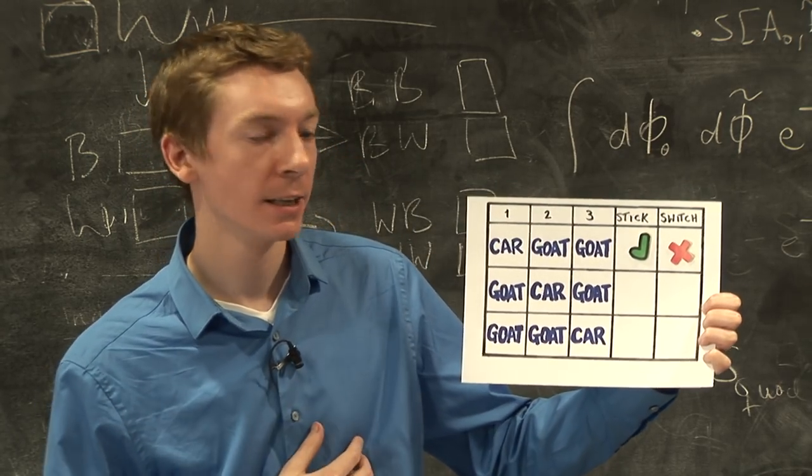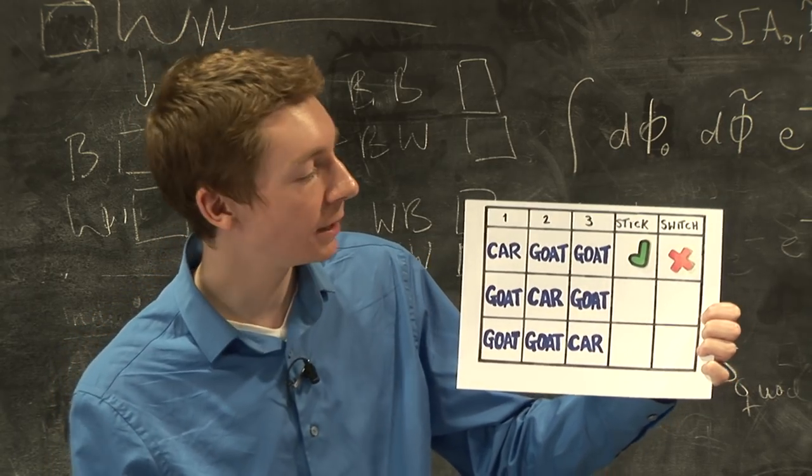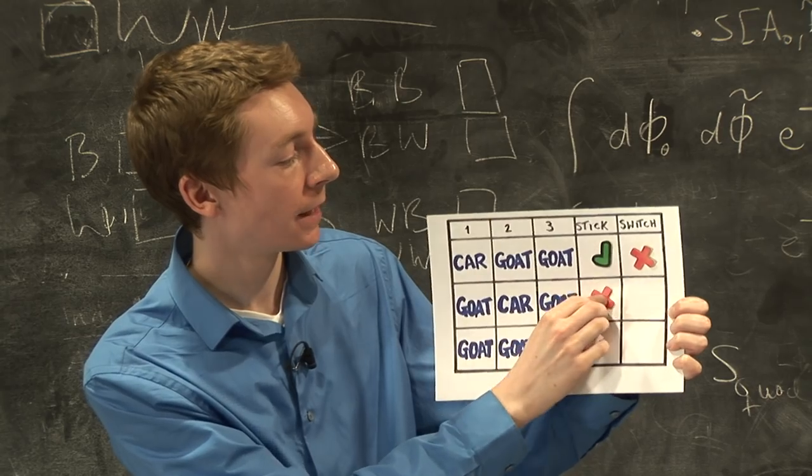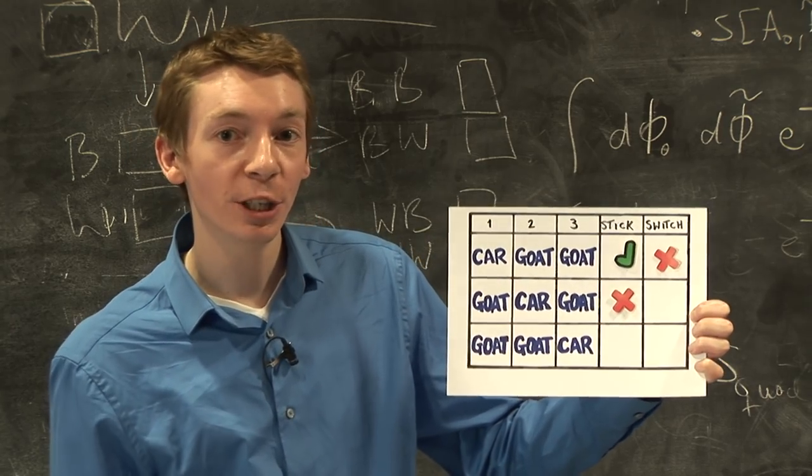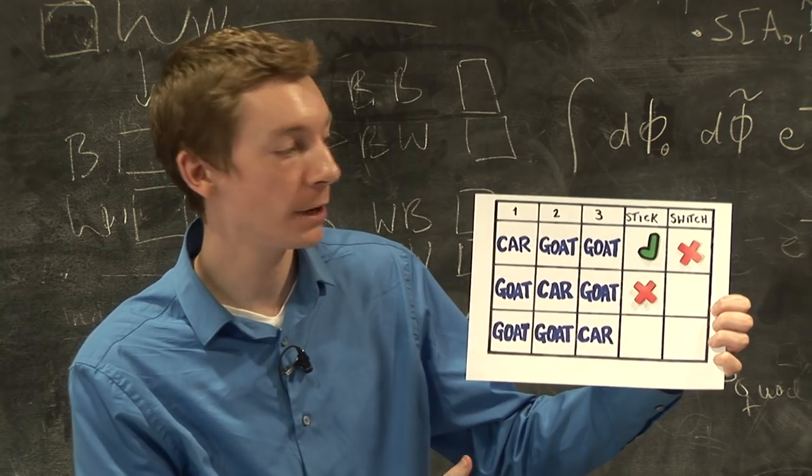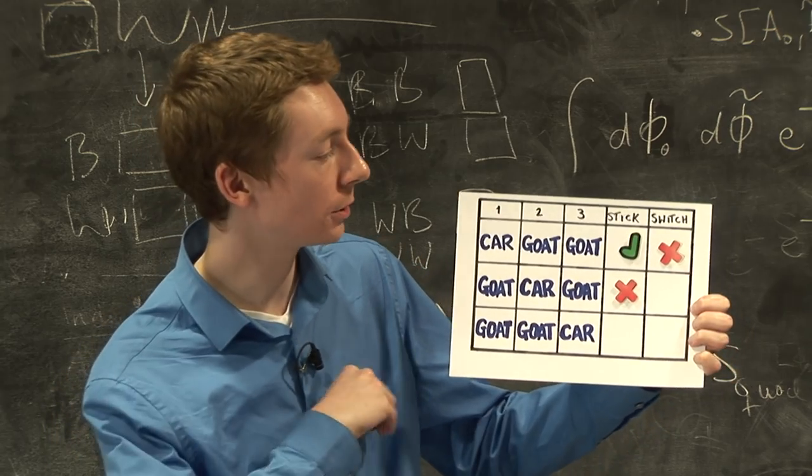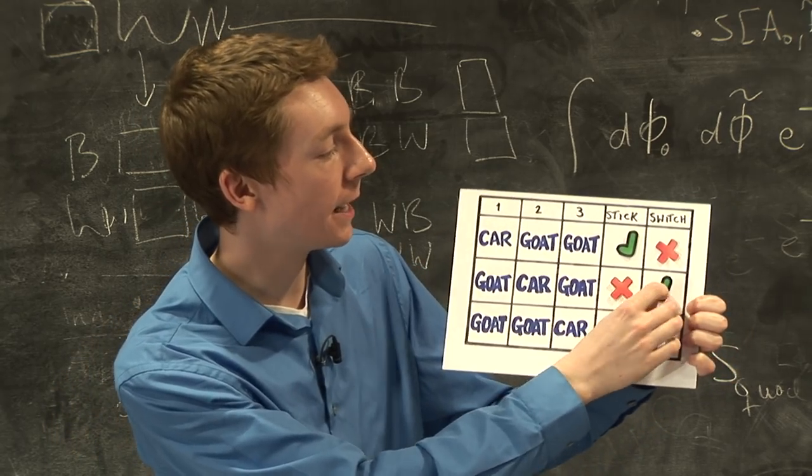But in the second case, if I stick with door number 1, I'm going to lose. So let's put an X next to that. And Monty Hall, well, he has to open door number 3. He's forced to open door number 3, which leaves the car behind. So if you change your mind, you're going to win the car. So let's put a tick next to that.